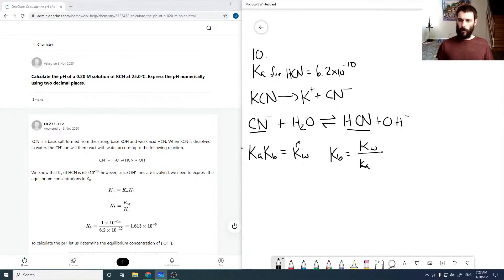Kw is 1 times 10 to the minus 14, it's just a constant. So 1 times 10 to the minus 14 over Ka, which is 6.2 times 10 to the minus 10, equals 1.6129 times 10 to the minus 5.